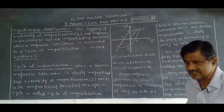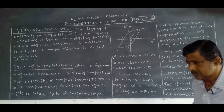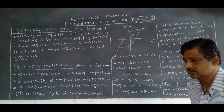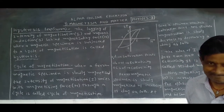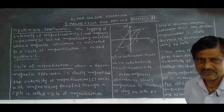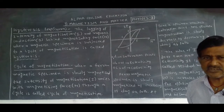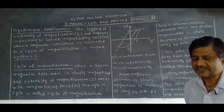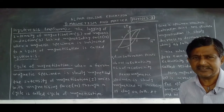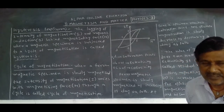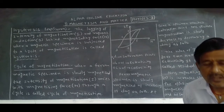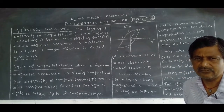What is hysteresis or what is the hysteresis loop? In the last class we studied dia, para, and ferromagnets. For ferromagnets we studied domains. When ferromagnets are taken in an external magnetic field, they are converted into a magnet. With the help of the hysteresis loop or hysteresis curve, we divide ferromagnets into two types.